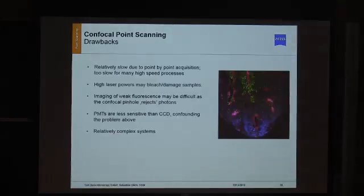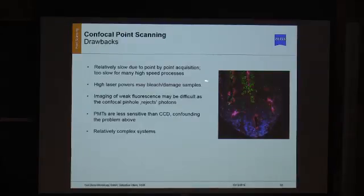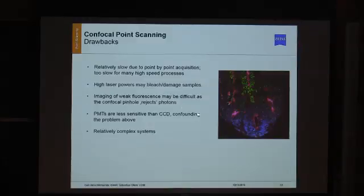The drawbacks of confocal point scanning microscopes: it's relatively slow because we scan point by point — widefield gets information from all points in one shot. Another disadvantage is that you typically use very high laser power, giving high light intensity per pixel, which can bleach or damage your sample. Imaging weak fluorescence is relatively difficult because the pinhole blocks much of that weak signal. Also, the PMT detectors used in confocal systems are generally less sensitive than camera-based CCD or sCMOS systems, which compounds the problem.